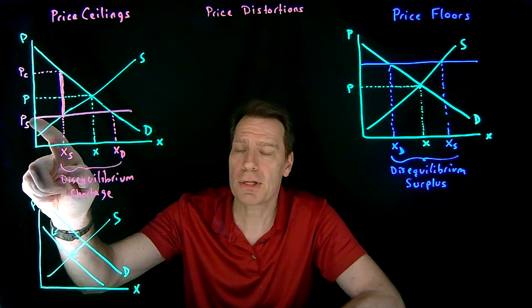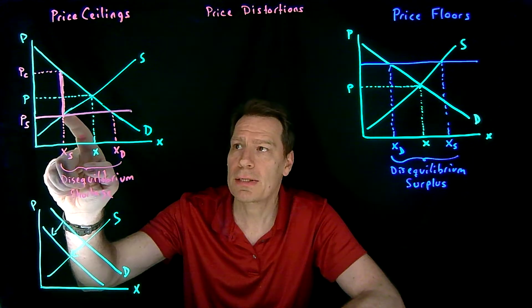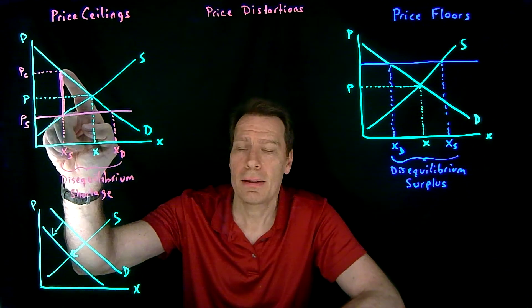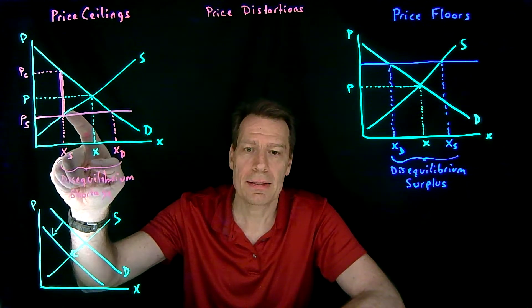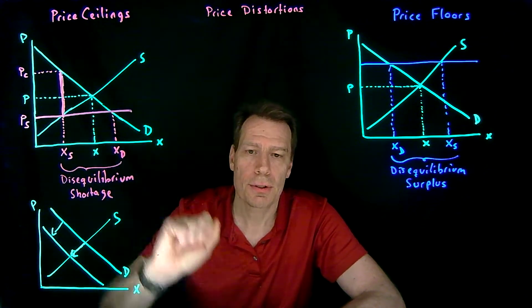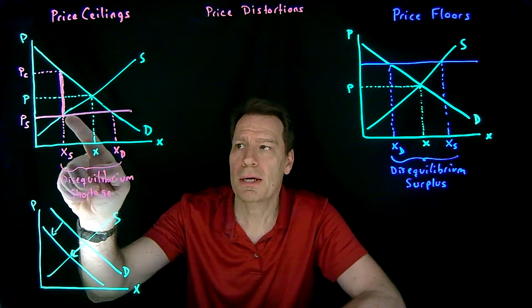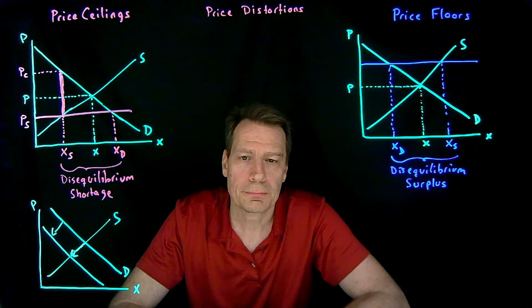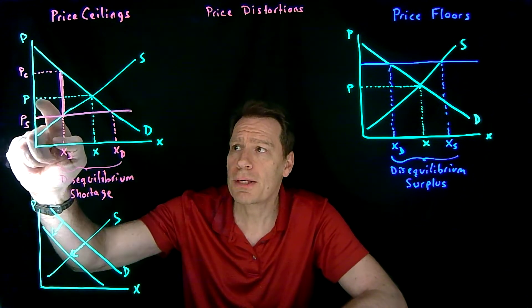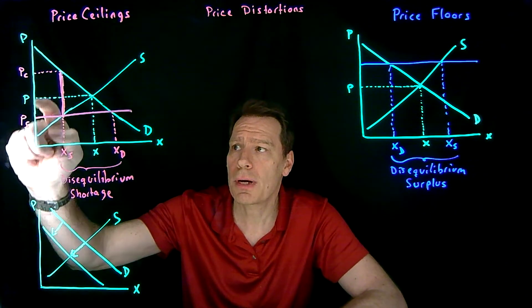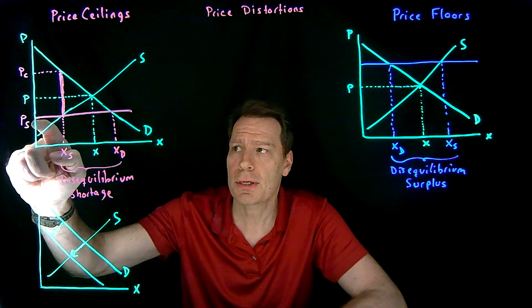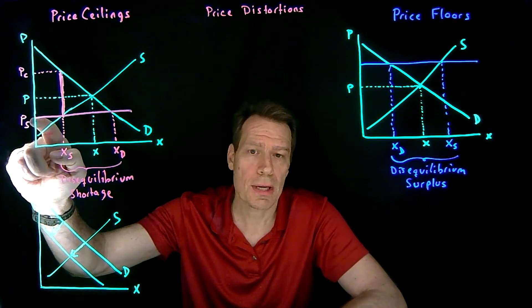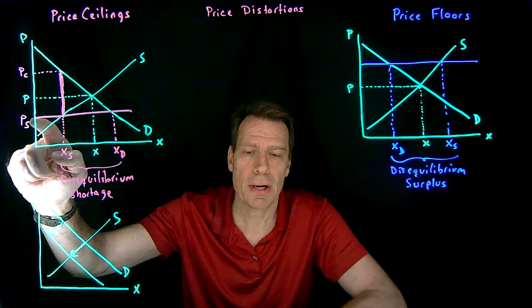They're going to only pay this much in cash, but the rest they're going to pay as an effort cost to make sure they get to the goods. So the price for consumers goes up, while the price for sellers goes down to the price ceiling.